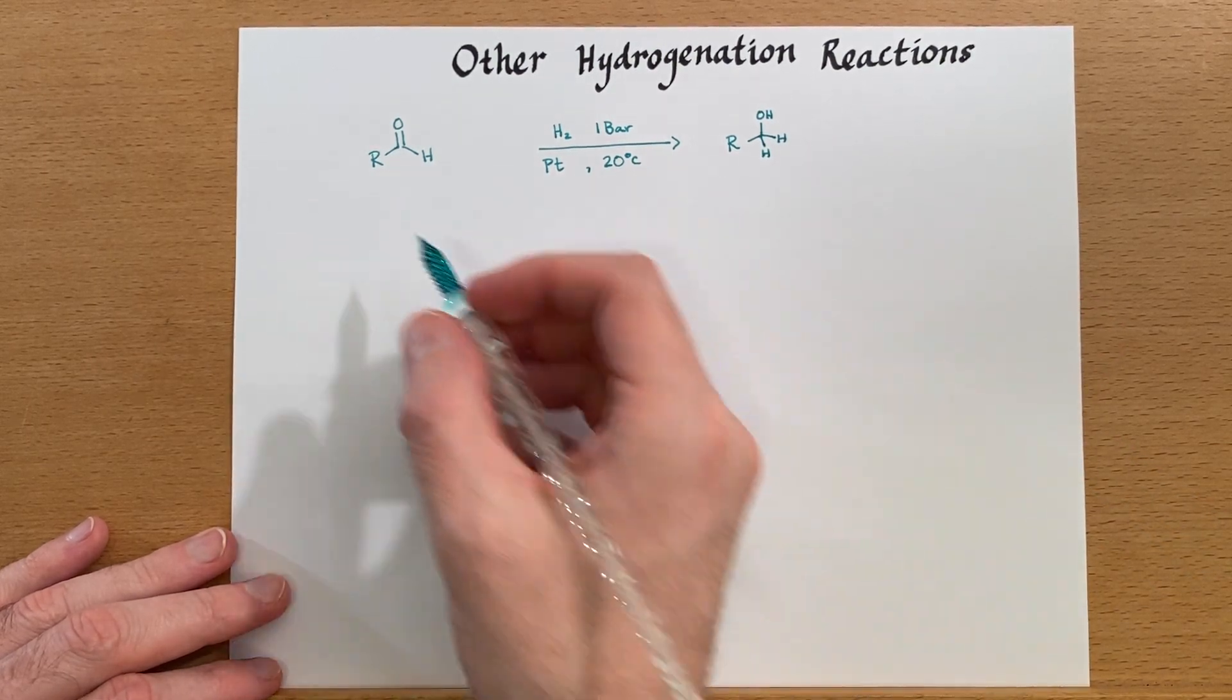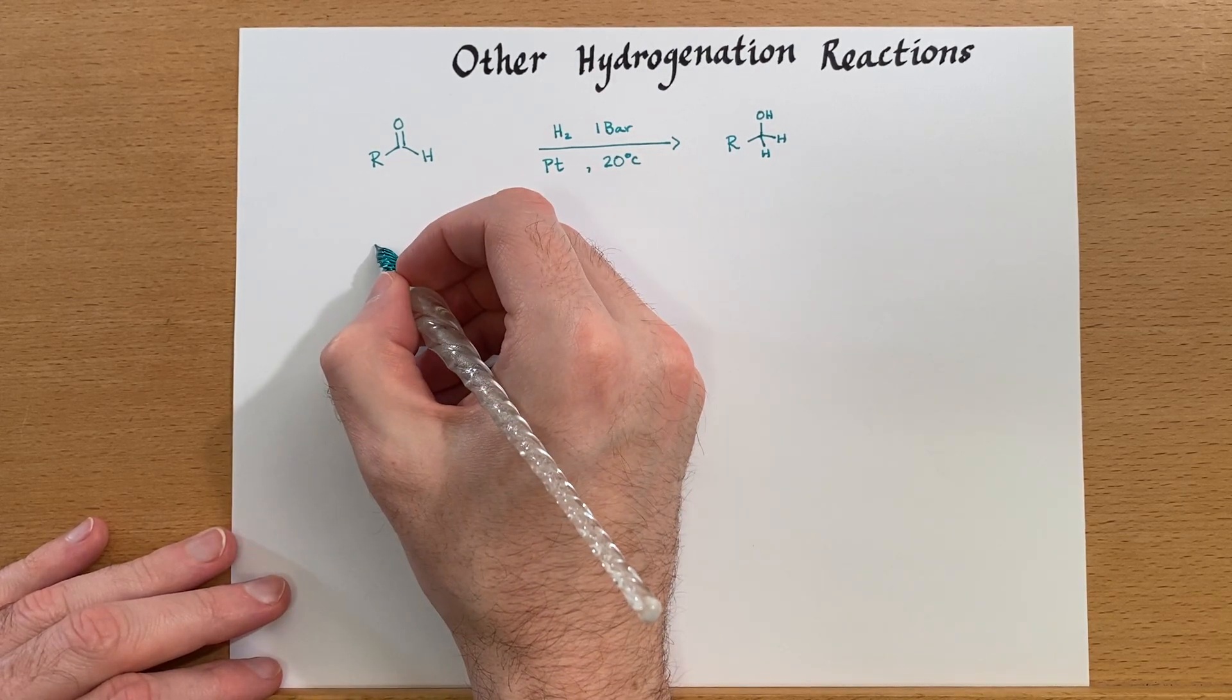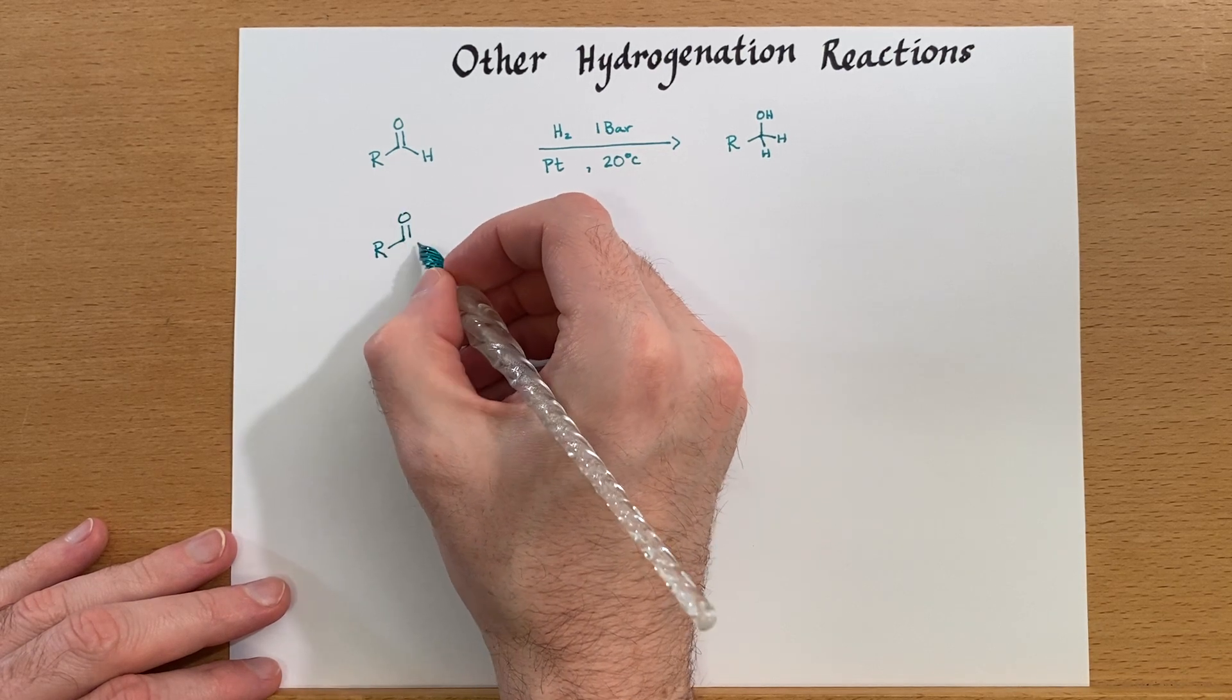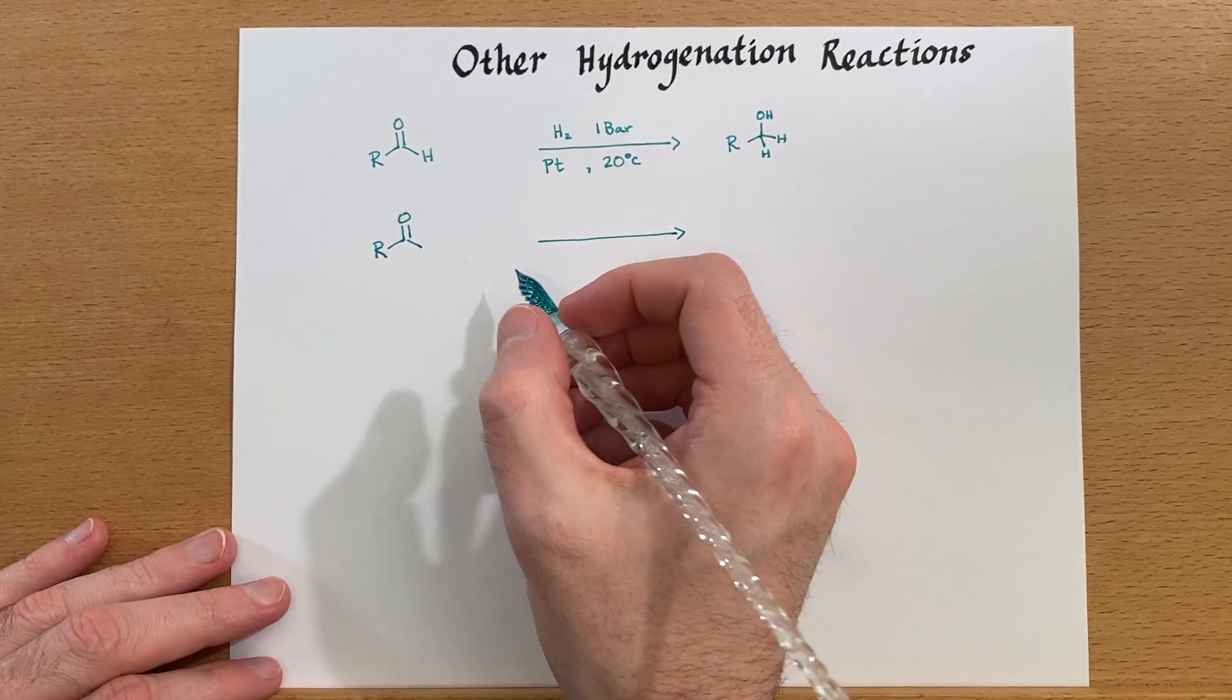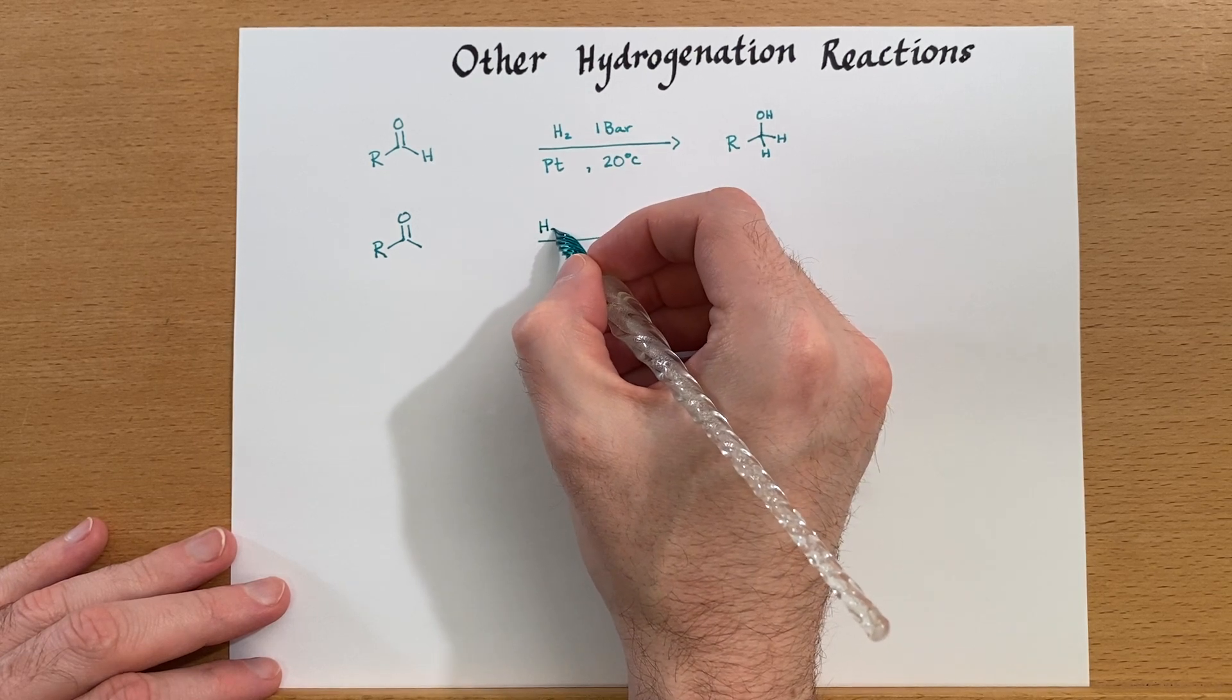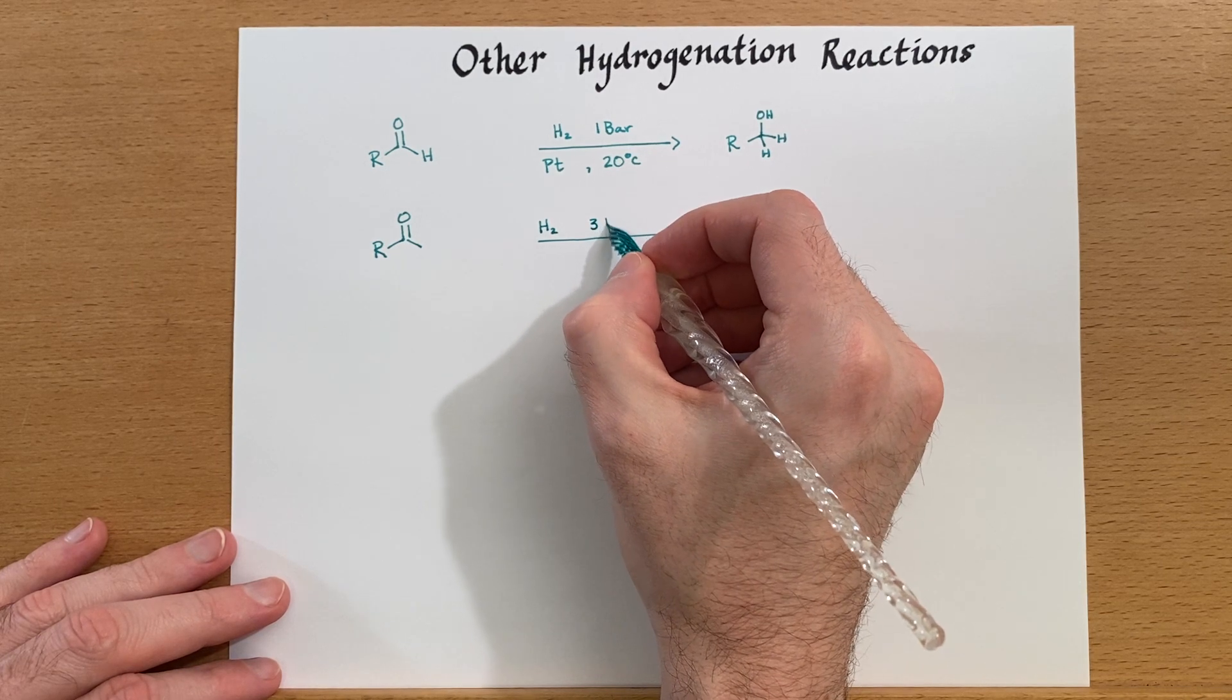Next let's look at the ketone, which is similar to the aldehyde but less reactive. Here's a ketone and in this case it is possible to reduce using hydrogenation. However, we need to increase the pressure for the reaction to occur.